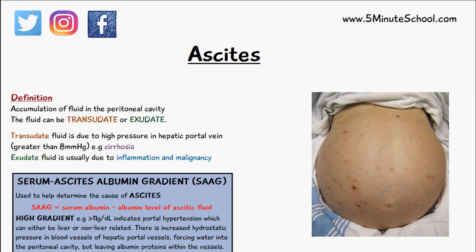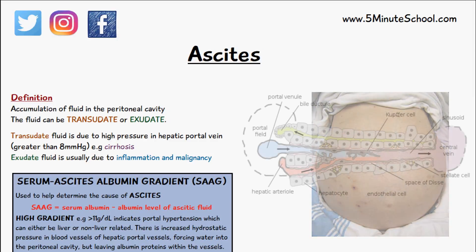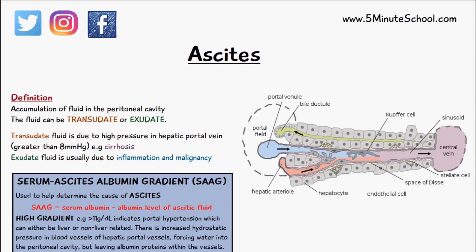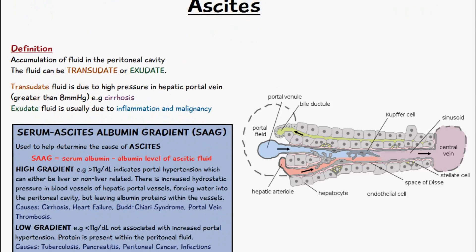The fluid which accumulates can either be transudate or exudate. Transudate has less protein and exudate is very protein rich. As a general rule, if the ascites fluid is transudate it tends to mean the cause was high pressure in the hepatic portal vein, with main causes including cirrhosis. If the ascites fluid is exudate, it's usually due to inflammation and malignancy, since it's more protein rich.